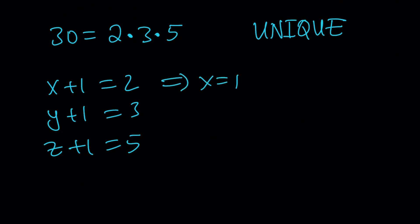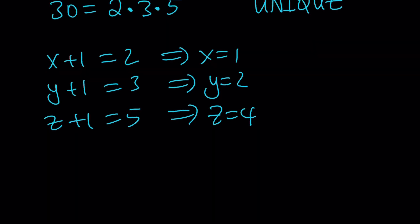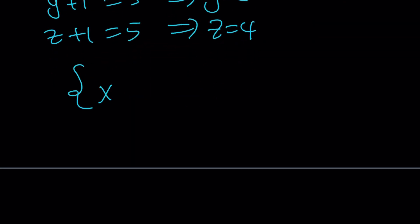So, from here, we get x = 1, y = 2, and z = 4. Obviously, they can switch around. So, x, y, z, I'm going to write it as a set that will consider all the permutations.